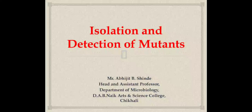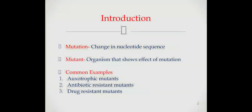In this lecture we will discuss about various methods used for isolation and detection of mutants. In simple language, mutation is nothing but change in nucleotide sequence of the genome, while mutant is the organism that shows effect of mutation. Some common examples of mutants are auxotrophic mutants, antibiotic resistant mutants, and drug resistant mutants.